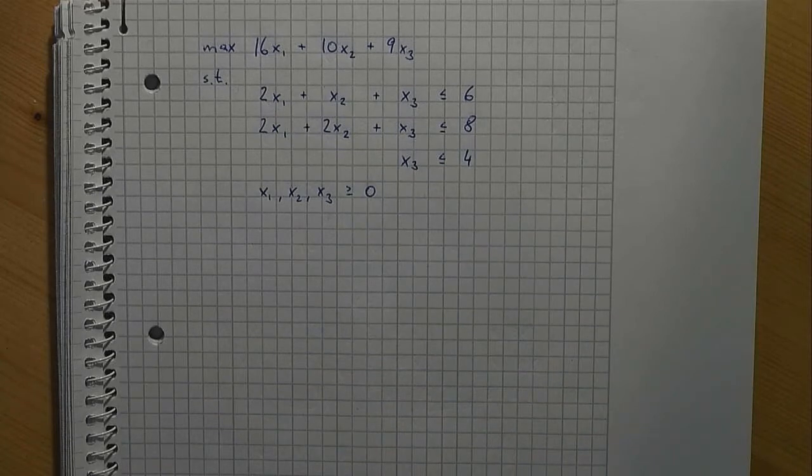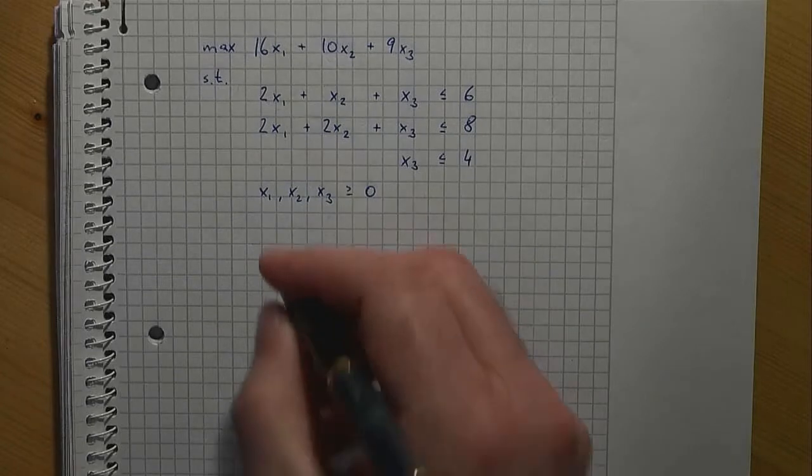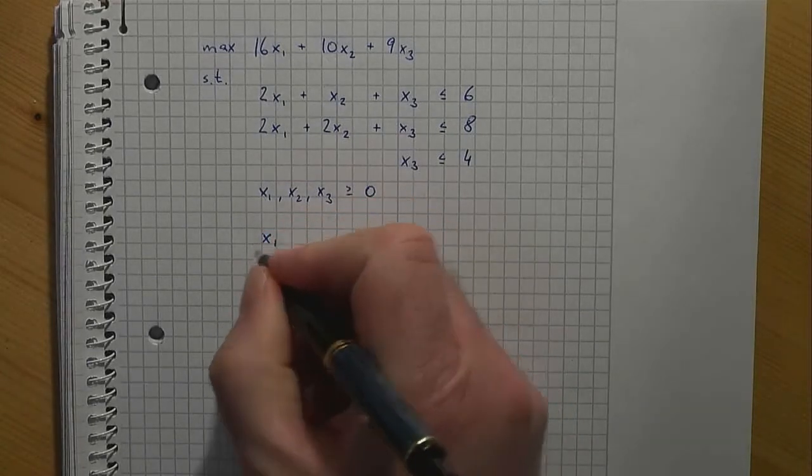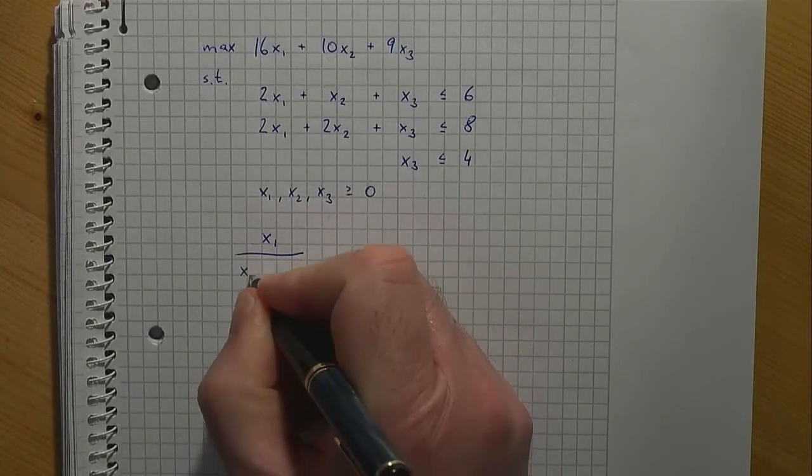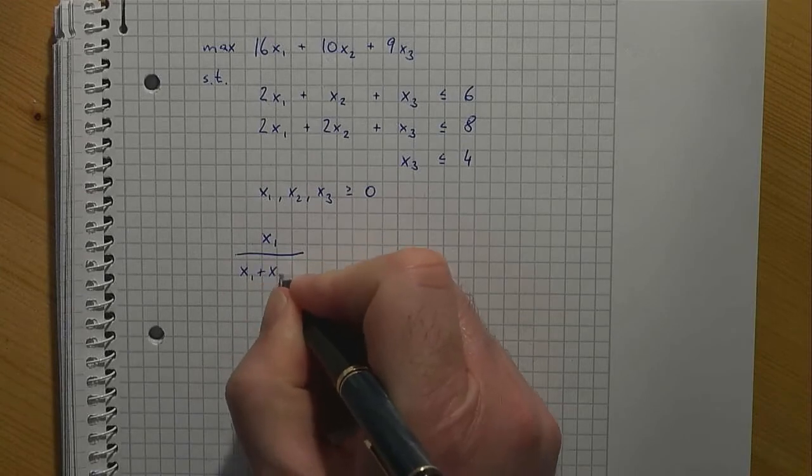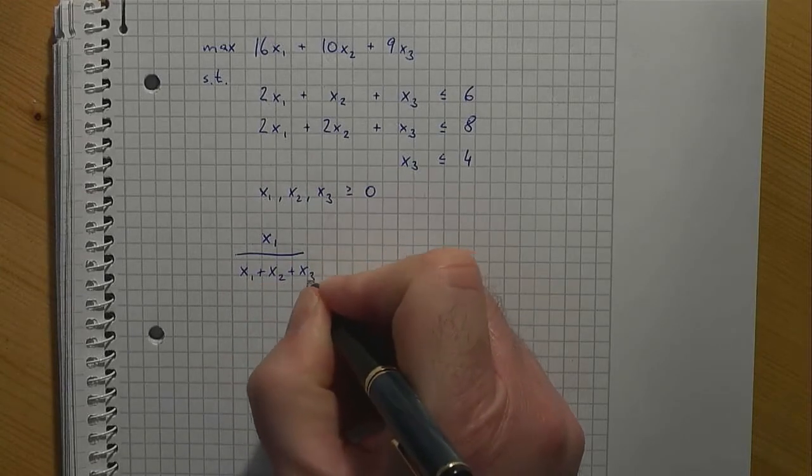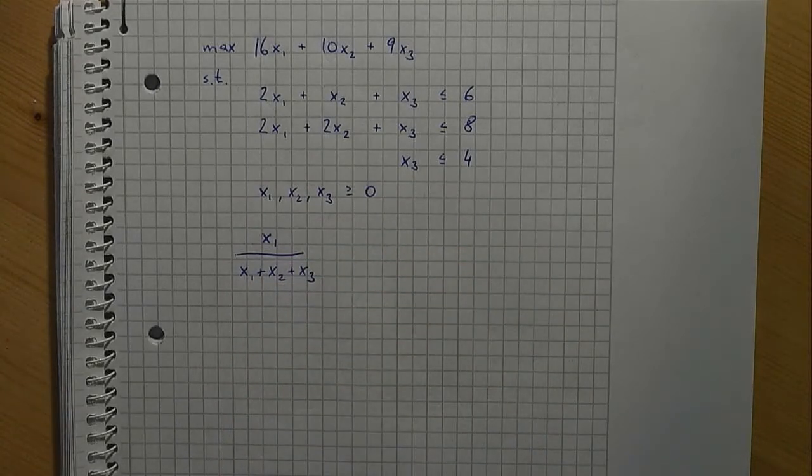To calculate what percentage of the furniture pieces are tables, we simply have to divide the number of tables by the total number of furniture pieces. In our exercise, this percentage must be less than or equal to 20%.